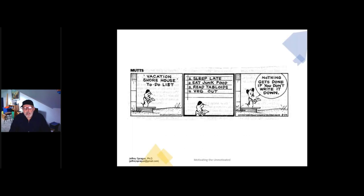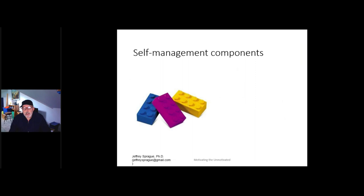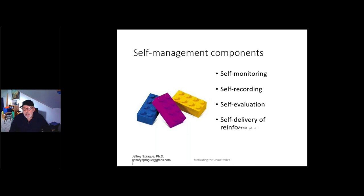Nothing gets done if you don't write it down — that's certainly true in my life. I use a number of apps on my phone and tablet and computer to keep track of my daily task list, not just for work but also personal goals such as exercise, time with my family, my spiritual life, my community service. So self-monitoring refers to being aware: are you doing what you're supposed to be doing? Self-recording means to mark that you did it in some way. And then self-evaluation — which is harder — is to say, 'Did I meet the criteria? Did I do it well?' And then ultimately I should be able to say 'good job' to myself.